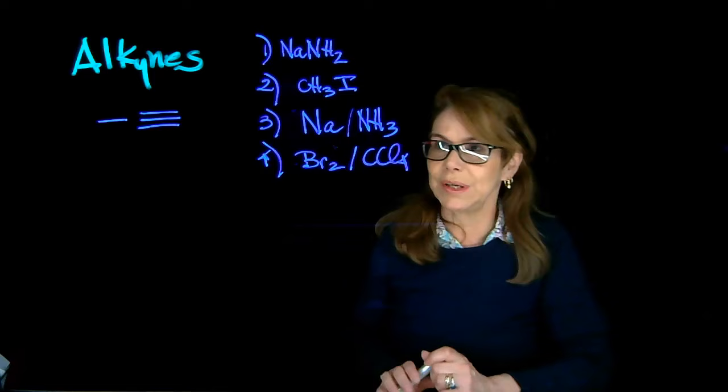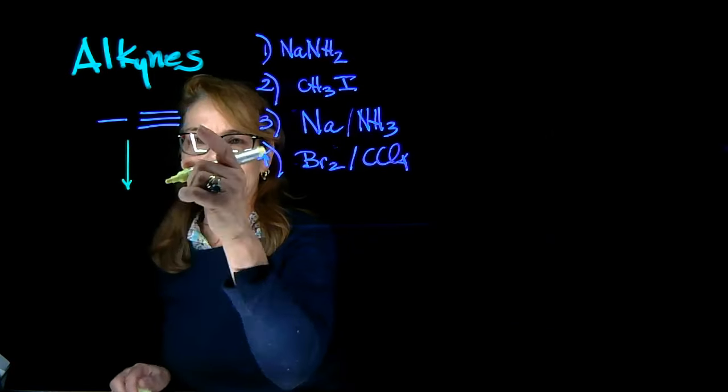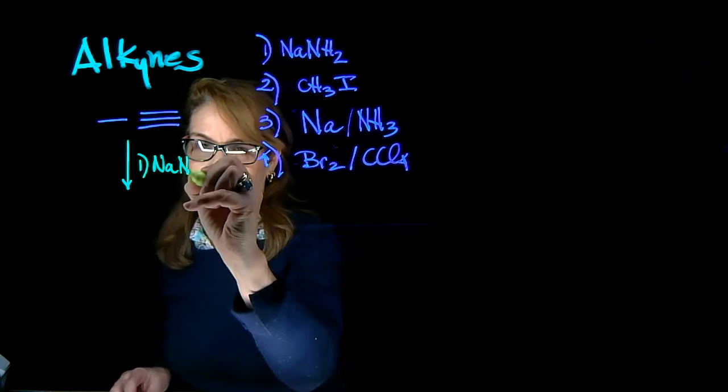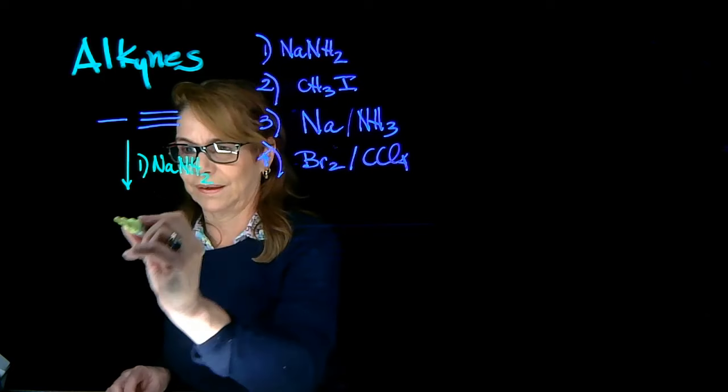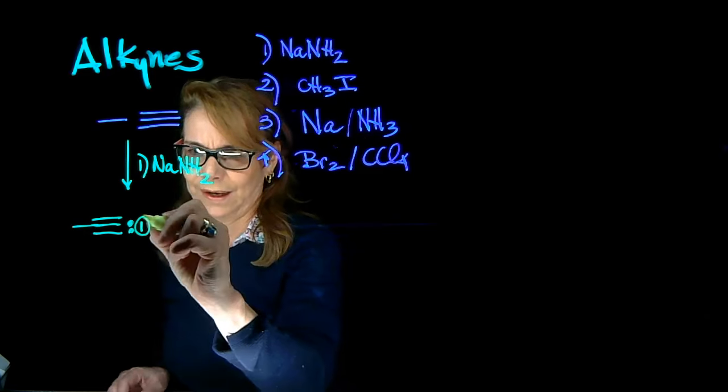Step one: you're treating propyne with sodium amide. So let's do that. Remember, terminal alkyne with sodium amide—you're removing the acidic hydrogen here to produce an alkynide anion.